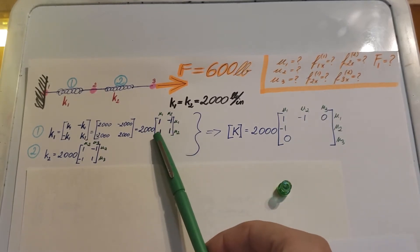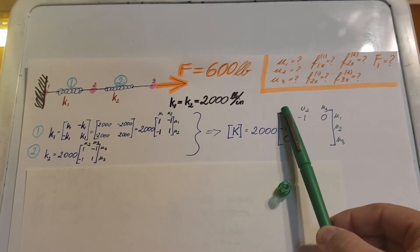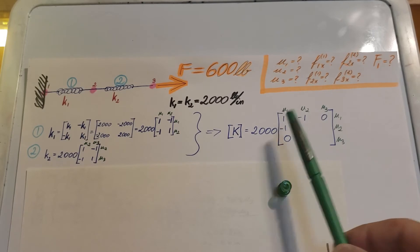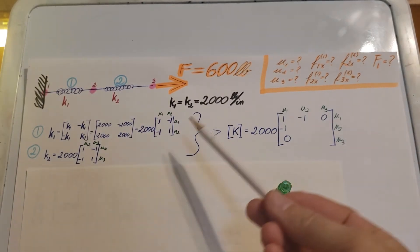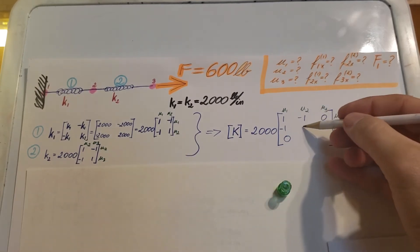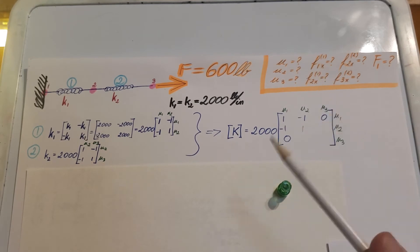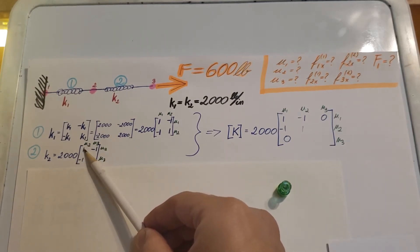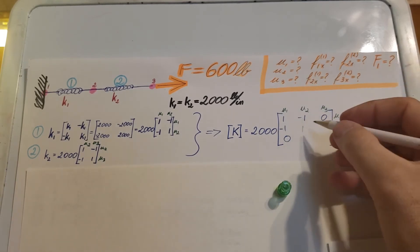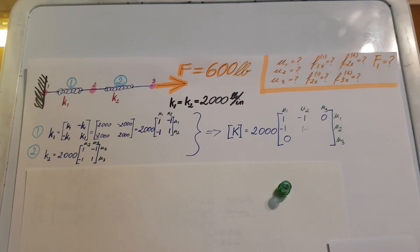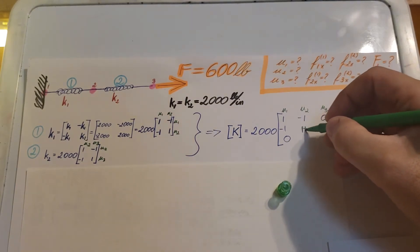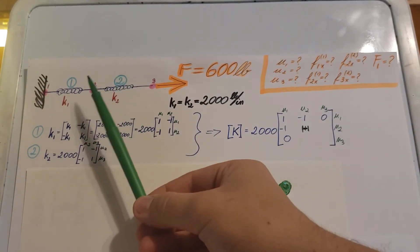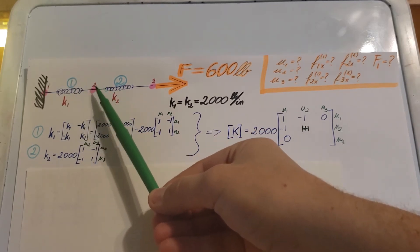U1,U2 is negative one — placed at that location. U2,U2 is one from element 1, but I use a pencil because element 2 also has a U2,U2 entry of one. So that position is actually one plus one, which equals two. This is logical because both elements meet at point 2, so they overlap at that location.